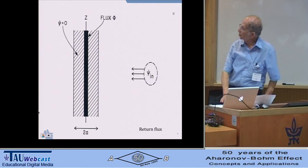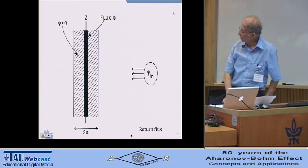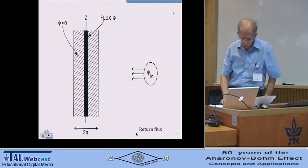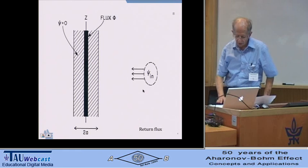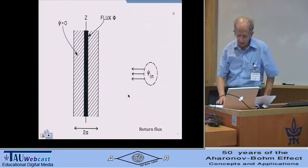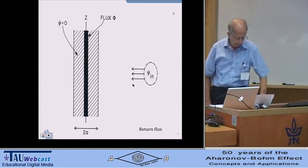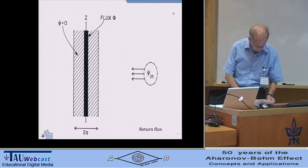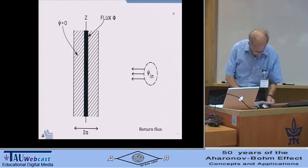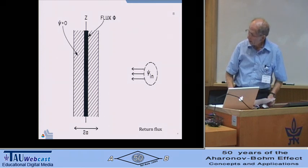And so there is a large region here where the experiment actually takes place, a laboratory which could have dimensions of meters, around in here, where there is no magnetic flux. If you want to be, you could actually, in principle, shield the flux so that it was literally zero in this region.